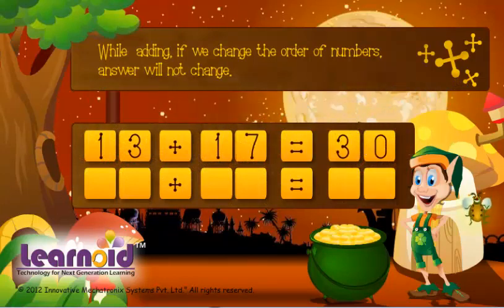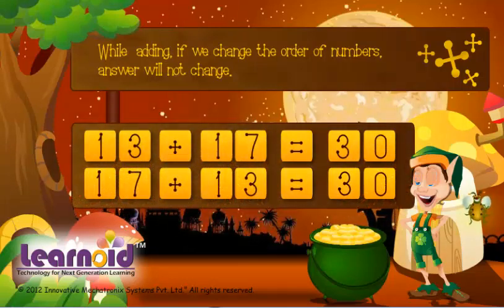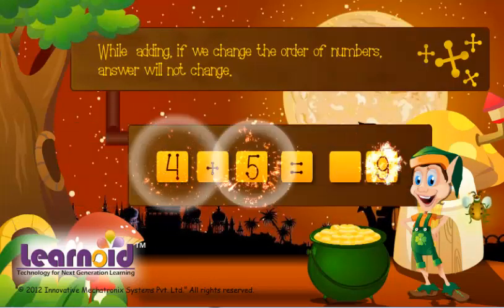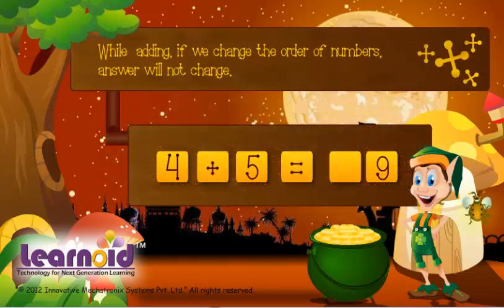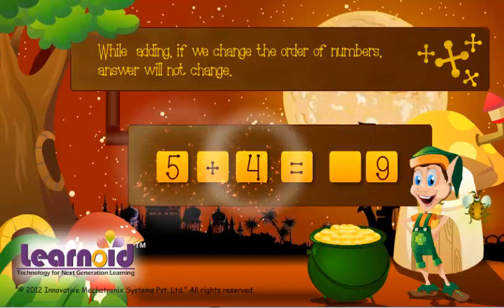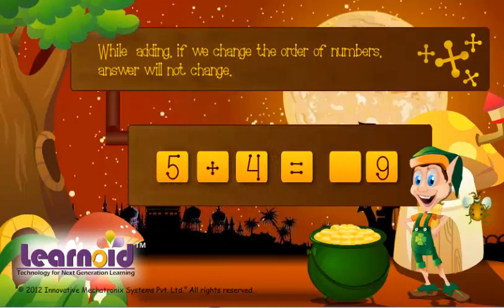13 plus 17 is 30. 17 plus 13 is 30. 4 plus 5 is 9. 5 plus 4 is 9.